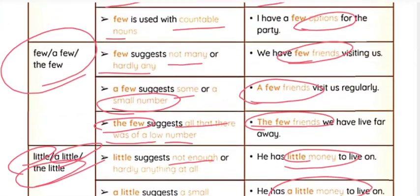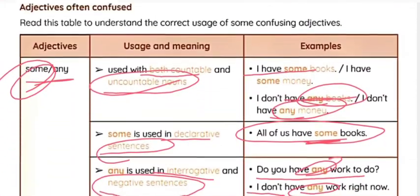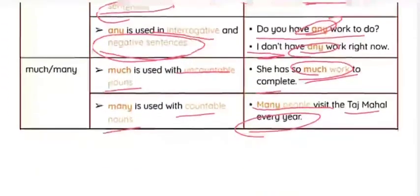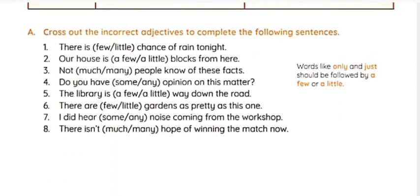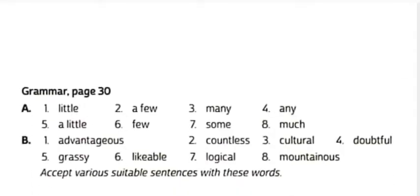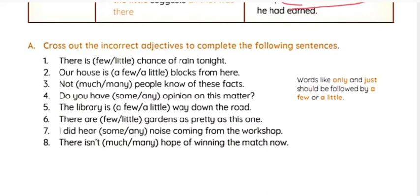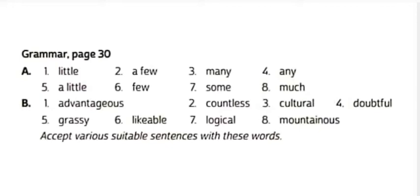I hope you have all understood this table — it is a very easy table. Try to listen a couple of times if needed, or analyze the table and you can easily get it. Now for the exercises: cross out the incorrect adjectives. 'There is few/little chance of rain today' — the answer is 'little.' 'Our house is a few/little blocks from here' — the answer is 'a few blocks.'